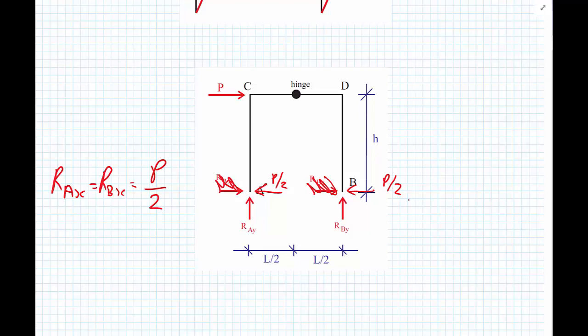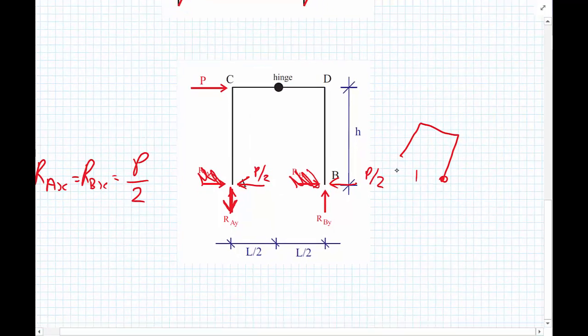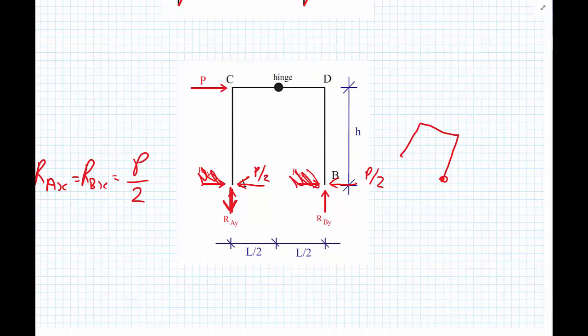And RAY would need to point downwards. So if we removed RAY, the whole structure would rotate around like this. So for it not to rotate around B, we would have to apply a downwards force at A.